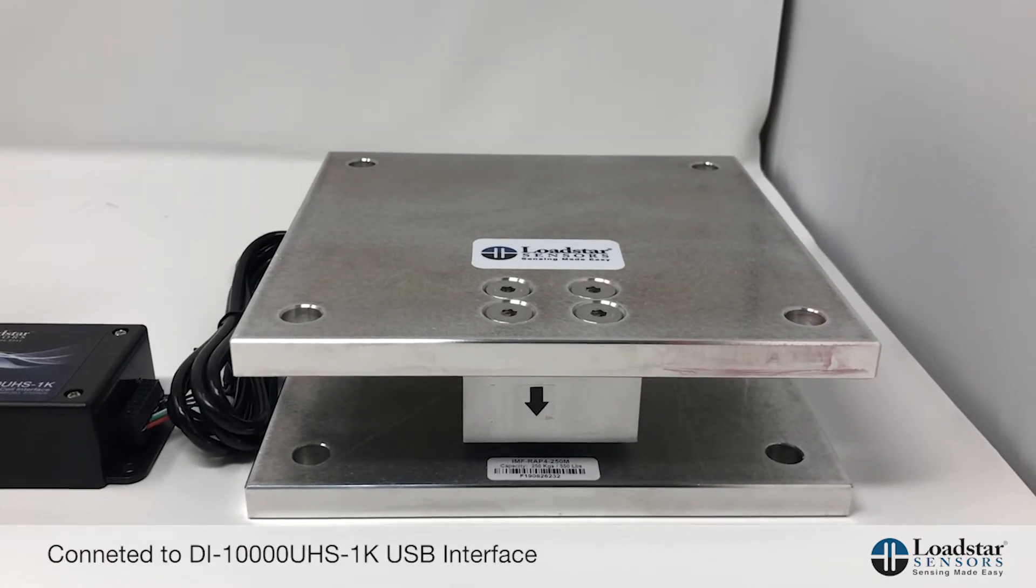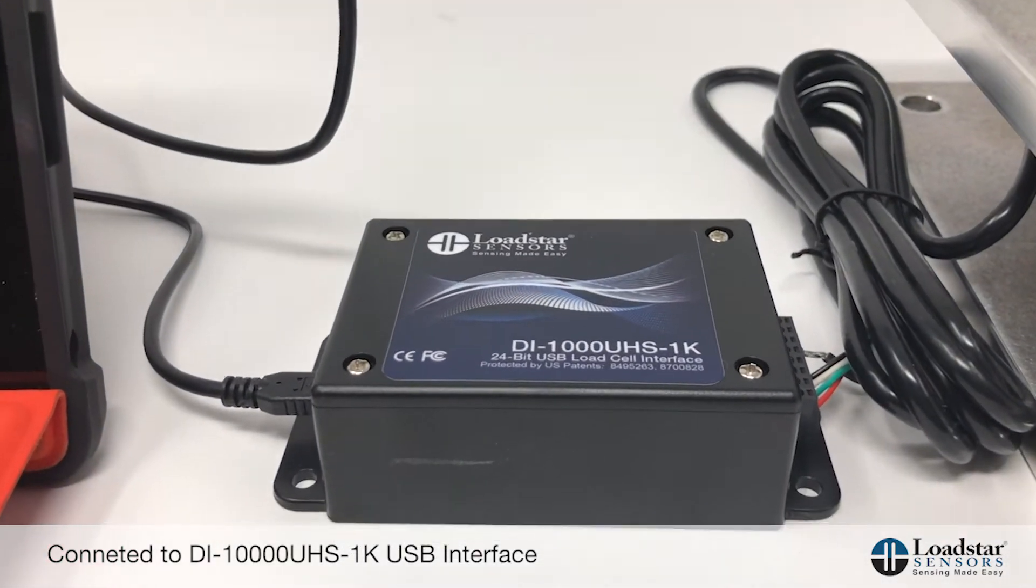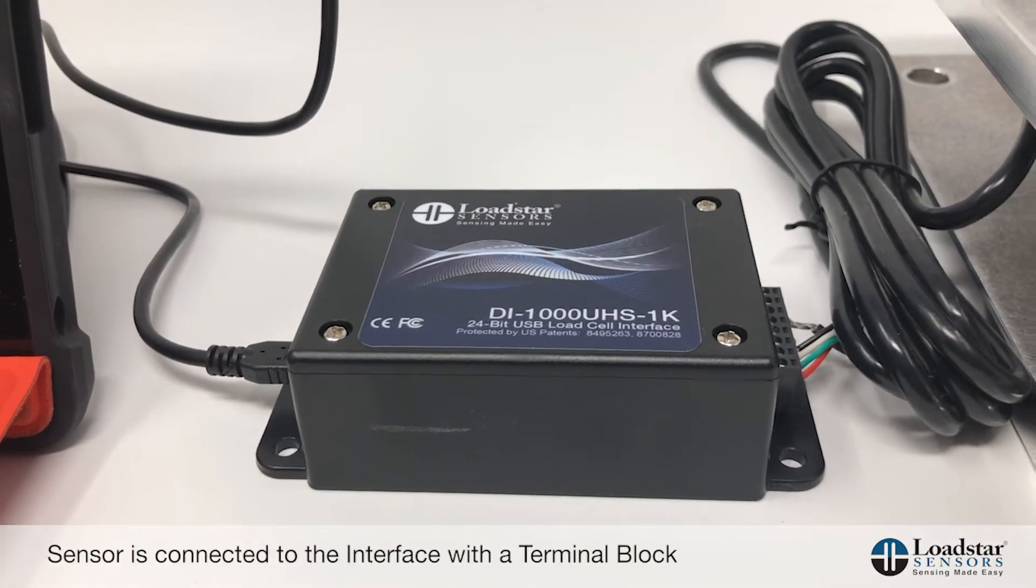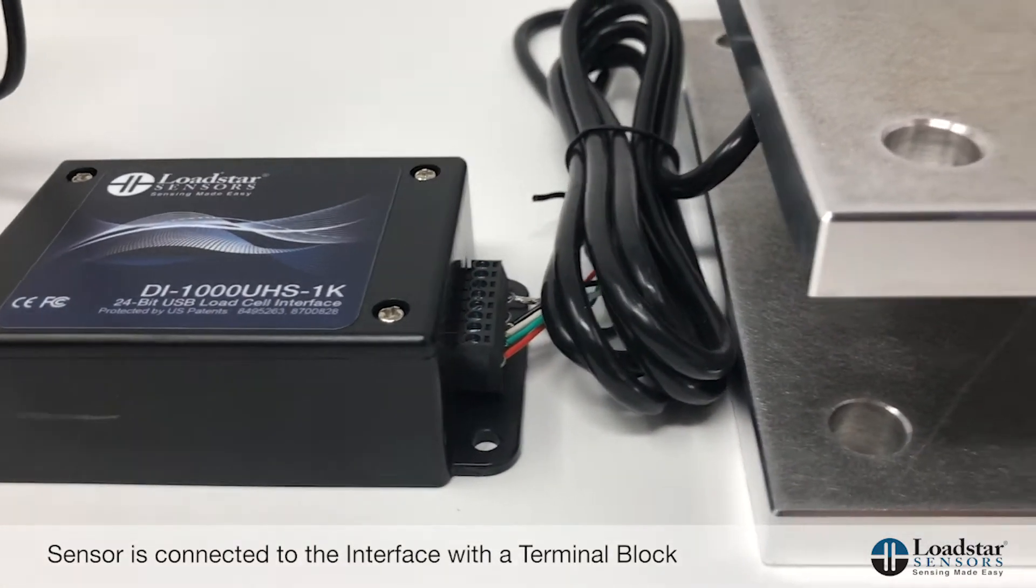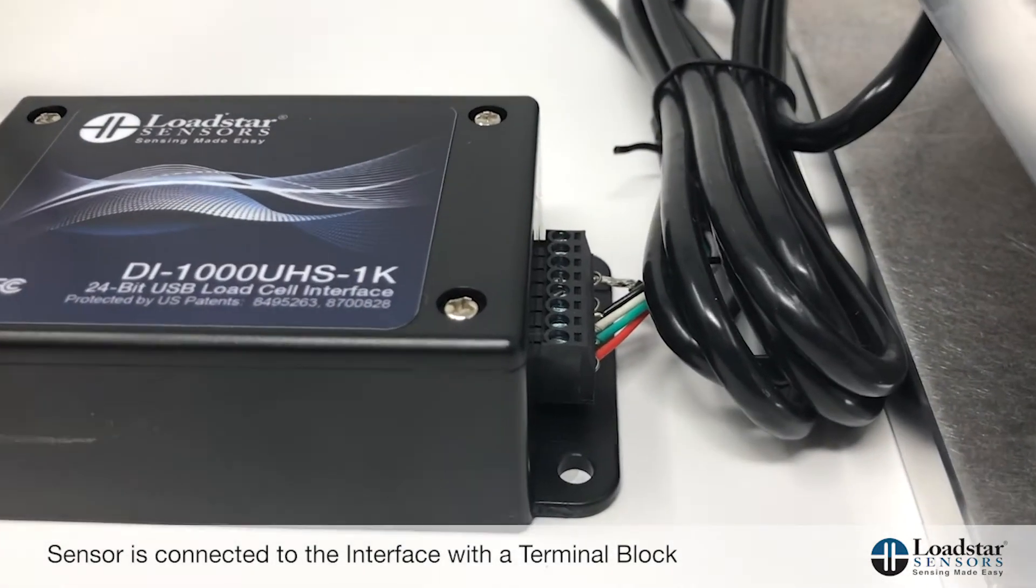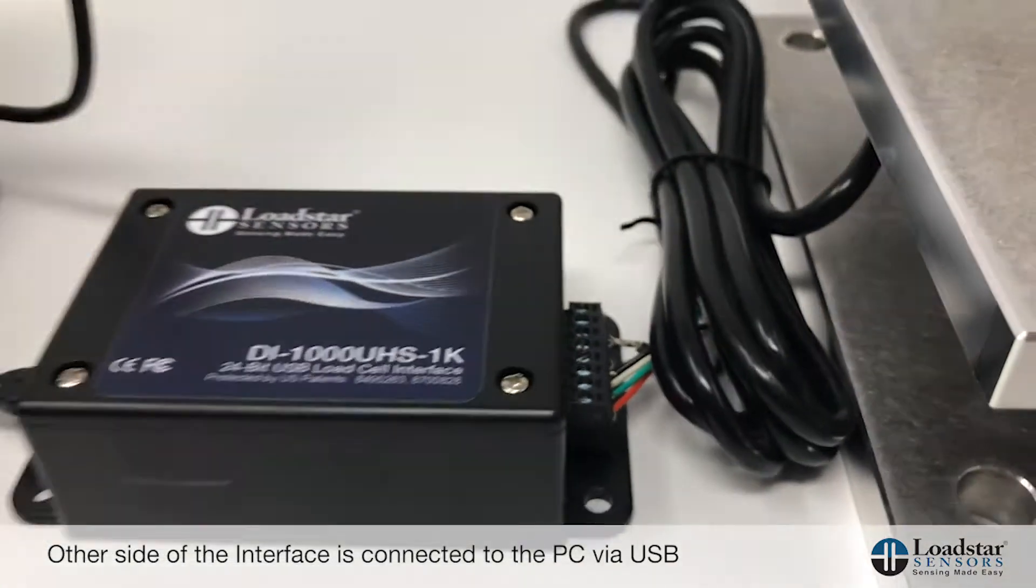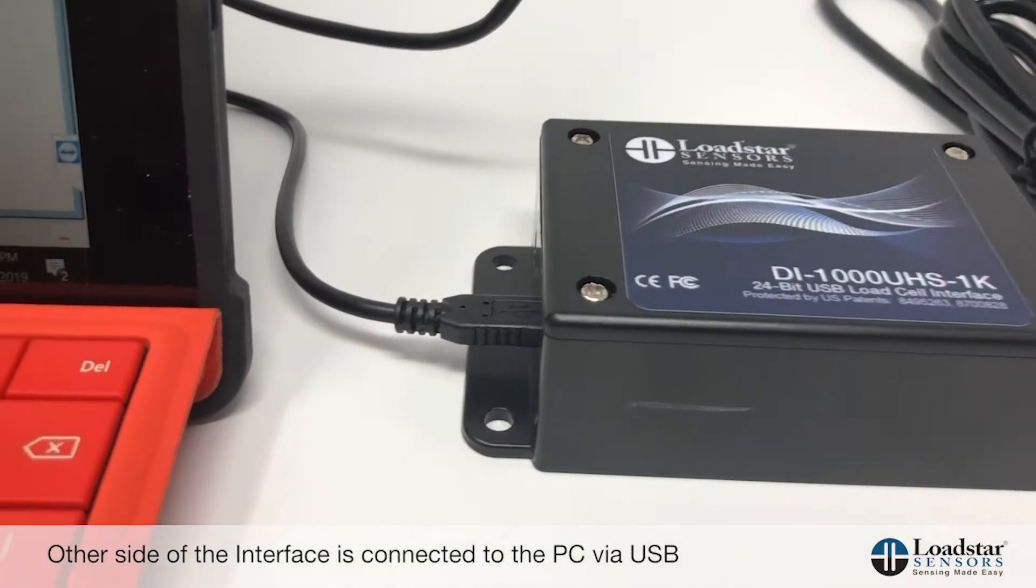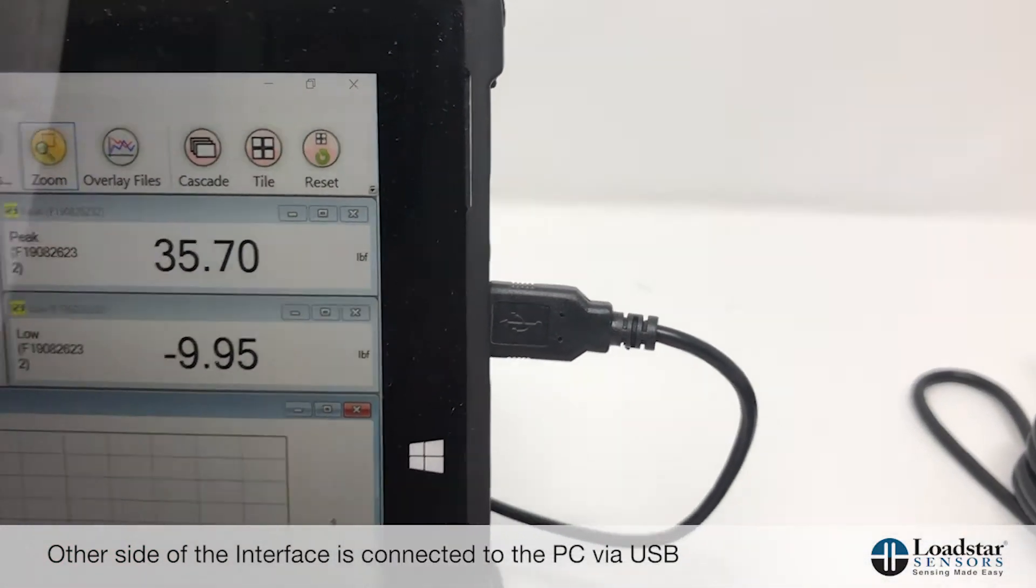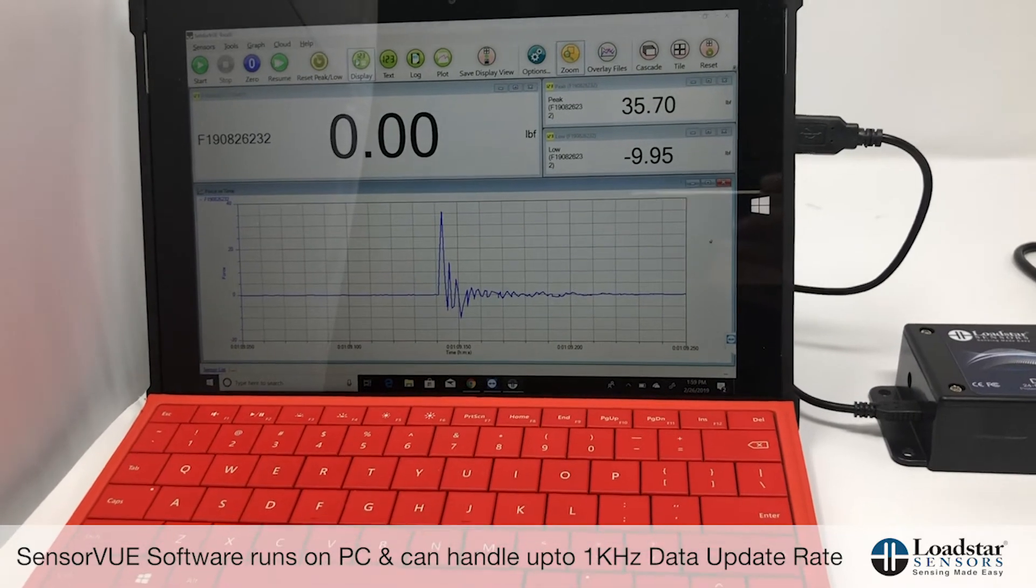It's connected to a DI-1000 UHS-1K USB interface. The load cell or sensor is connected to the interface through this terminal block, and on the other side of the device is our USB output. It goes directly into the PC, and the PC is running our SensorView software that can handle up to 1 kilohertz data update rate.